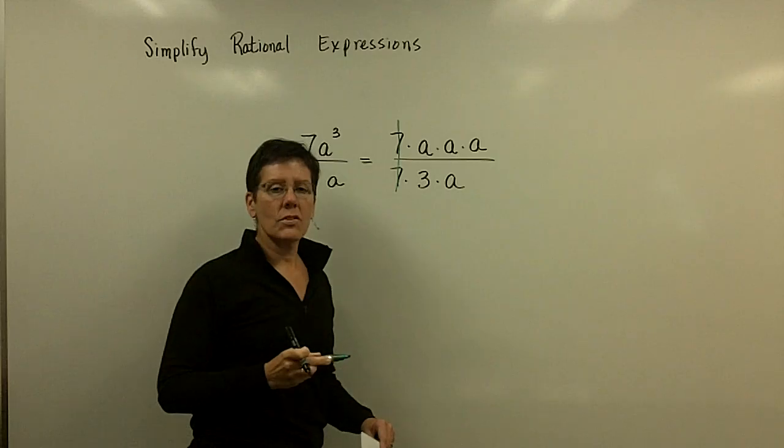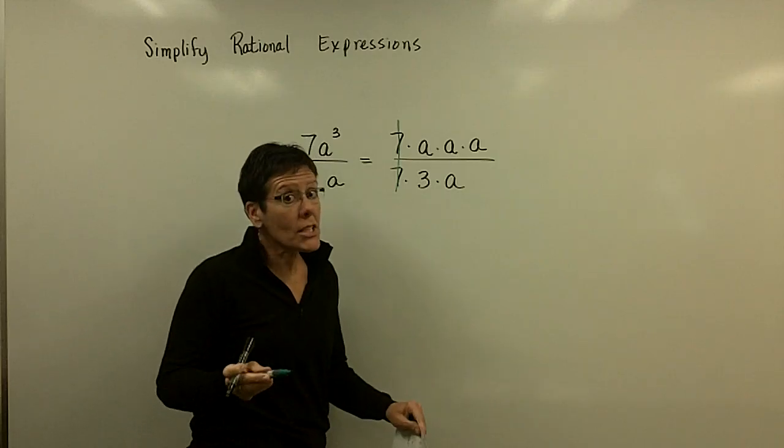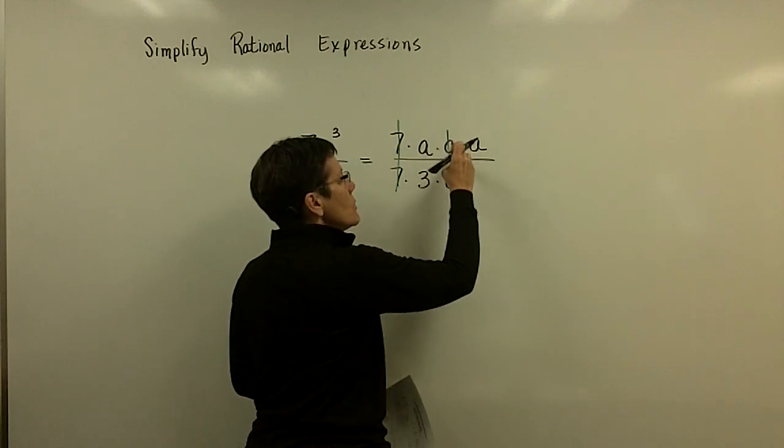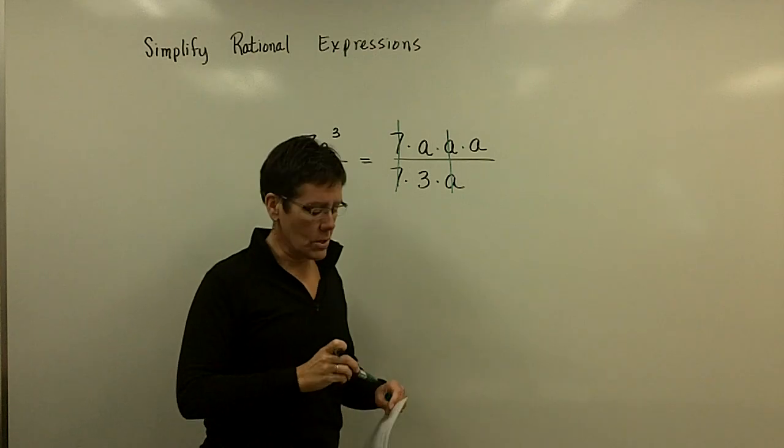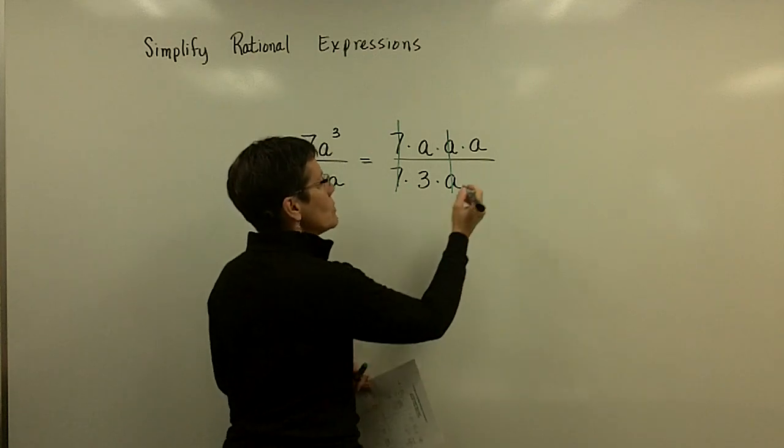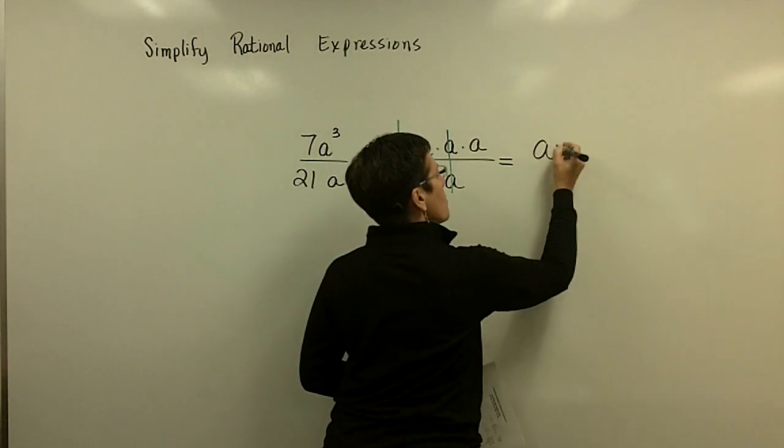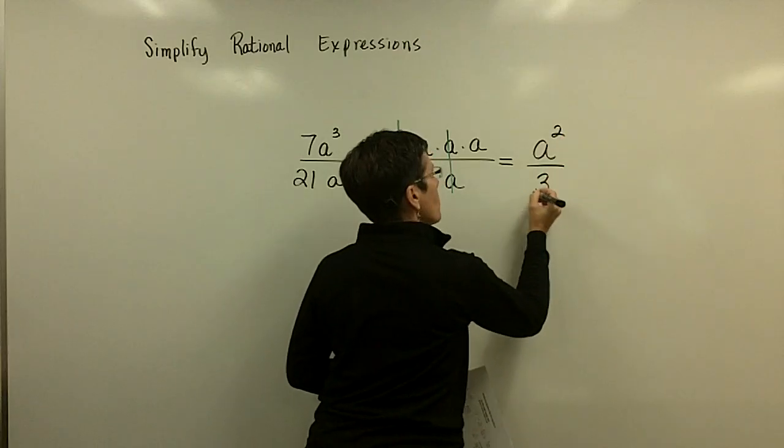7 over 7 is equal to the number 1. I haven't changed the value of the fraction. I'm removing a over a, which is the number 1. And I'm left with in this problem, a to the second power in the numerator over 3 in the denominator.